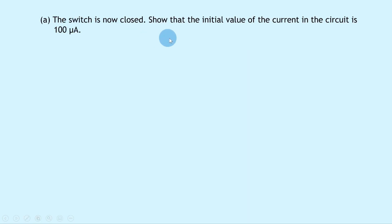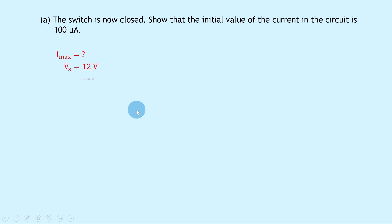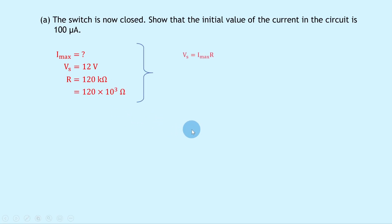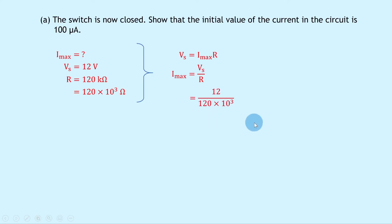Part A: the switch is now closed. Show that the initial value of the current in the circuit is 100 microamps. We're finding IMAX. VS, the initial voltage across the capacitor, is 12 volts, and resistance R is 120 kilohms or 120×10³ ohms. Rearranging Ohm's law: IMAX equals VS over R gives 12 over 120×10³, which equals 1×10⁻⁴ amps, or 100 microamps.